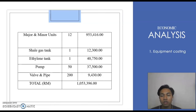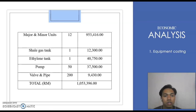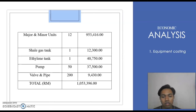Today I am going to continue for our IDP project, which is the Economic Analysis. There are 4 main parts for costing. As shown in the table, there are 12 major and minor units: 1 shale gas tank, 1 ethylene tank, 50 pumps, and 200 valves and pipes. The total equipment cost is RM1,053,396.